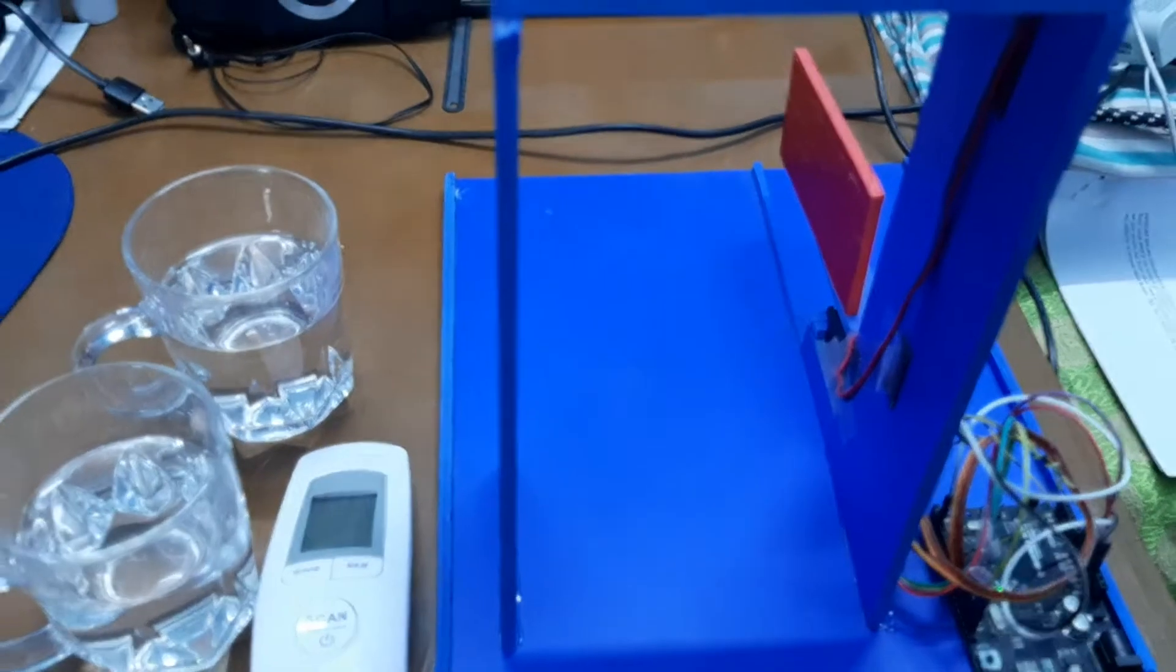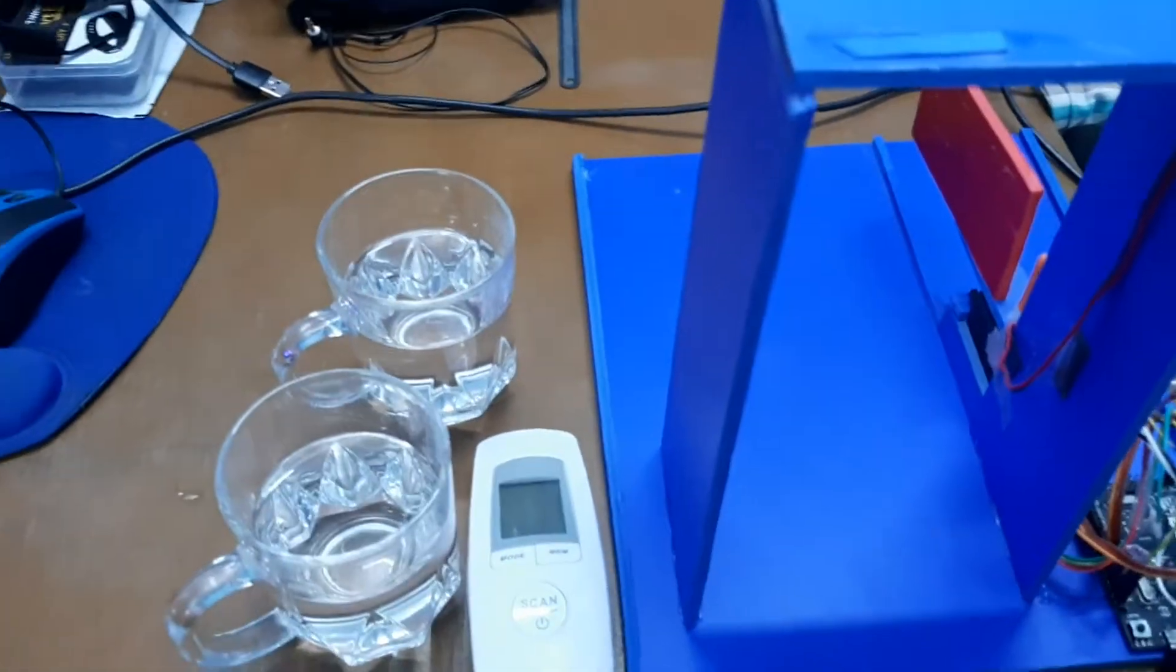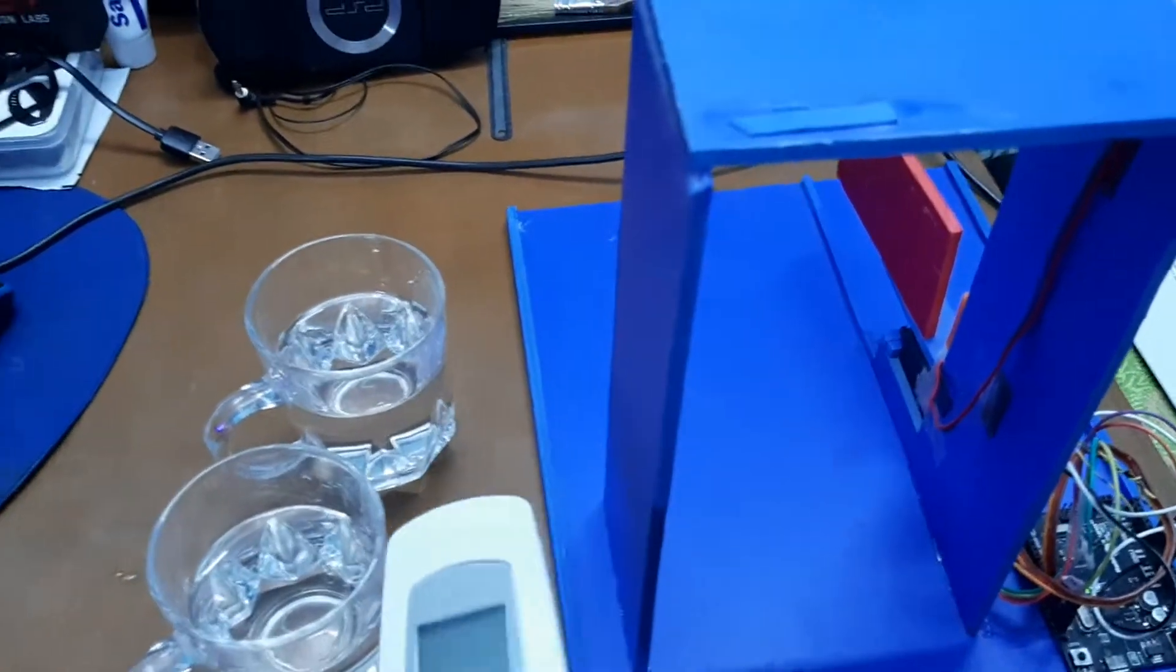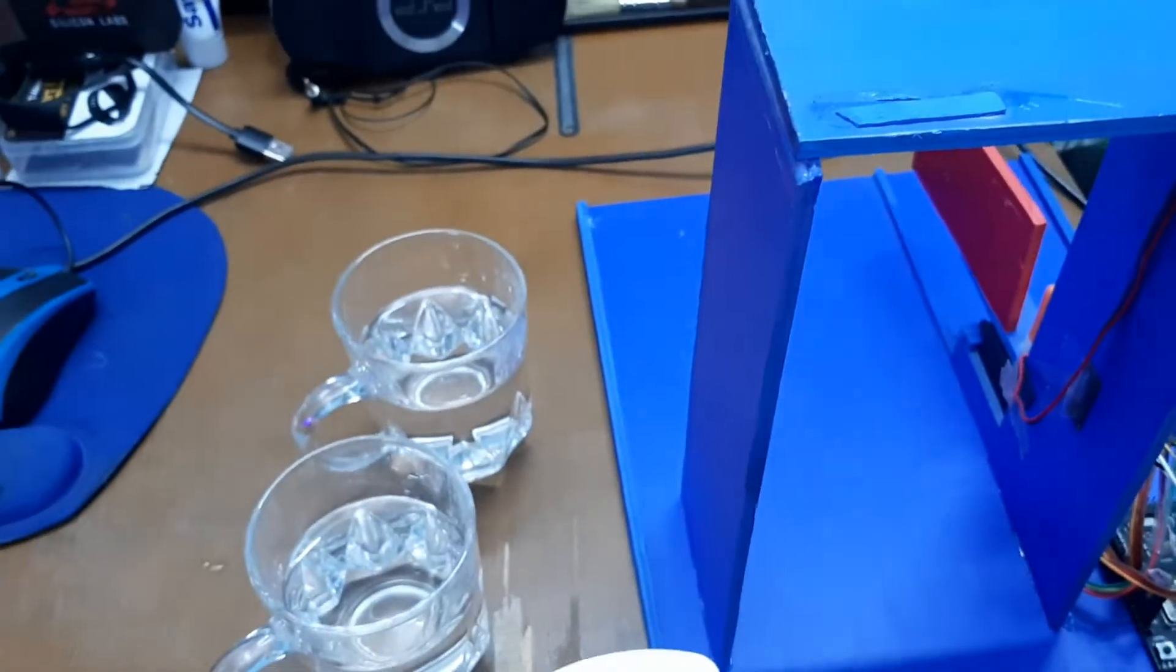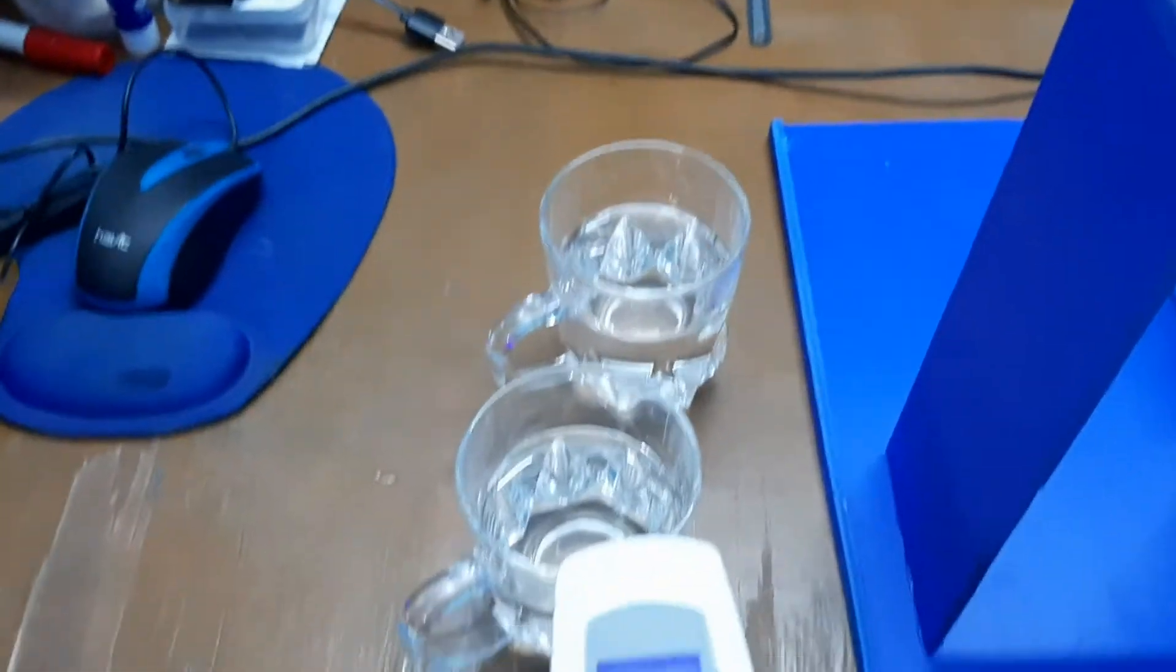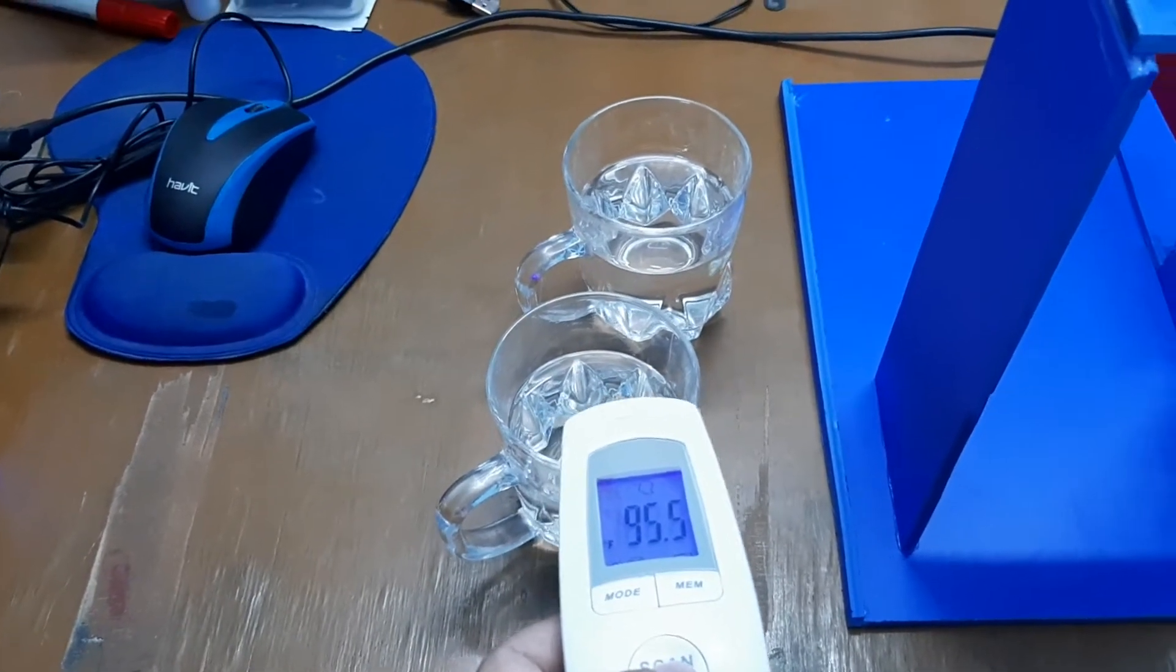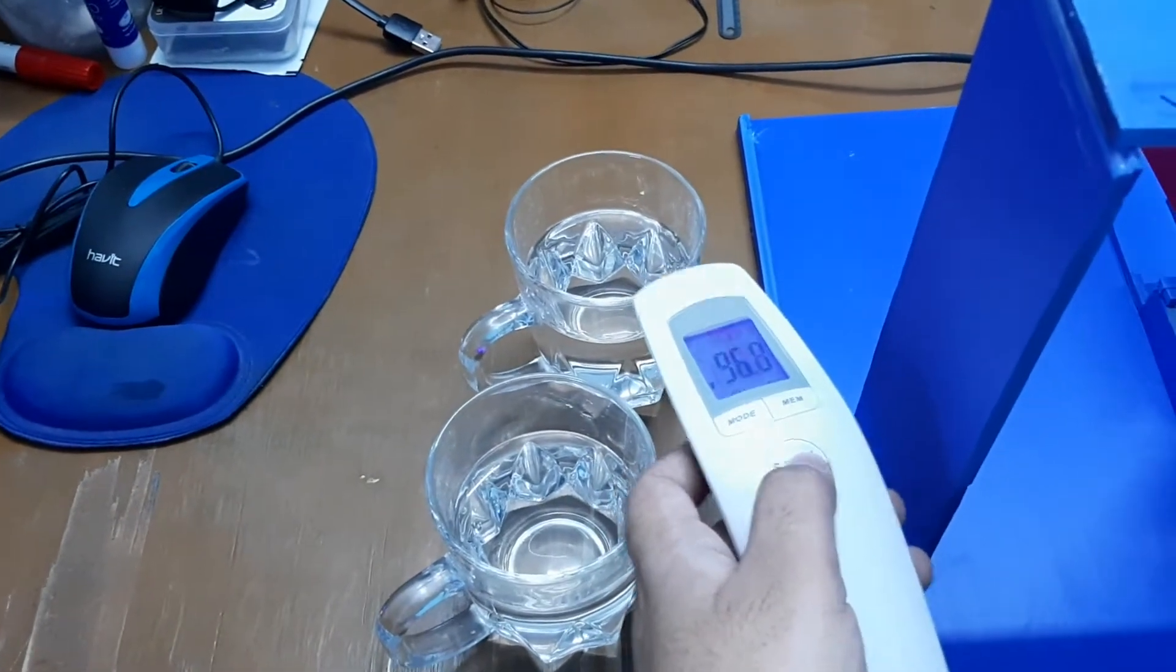For demonstrating, we used an IR thermometer and two glasses of water. One water has low temperature at 95.5 degrees, another one is high temperature at 96 degrees.